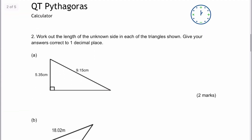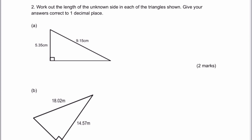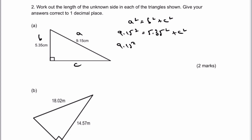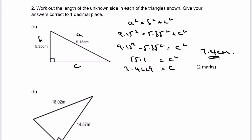There is another sheet here of similar sort of questions, and I'm just going to approach these in exactly the same way. A squared equals b squared plus c squared. The only slight issue here is we've got two decimal places. I'm just going to do exactly the same where c is the unknown side and b is the side I know. So I've got 9.15 squared minus 5.35 squared equals c squared. Pop that into a calculator, I'm going to get 55.1 equals c squared. So therefore c is going to equal 7.4229. My unknown side to one decimal place is 7.4 centimetres.